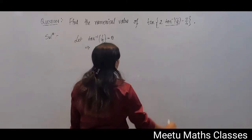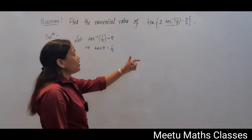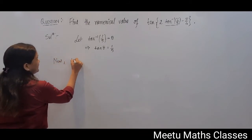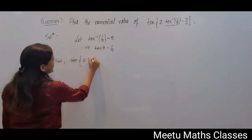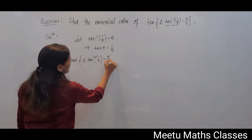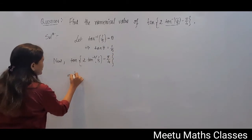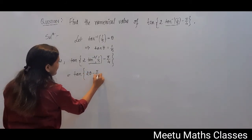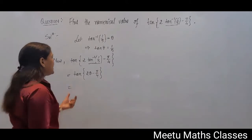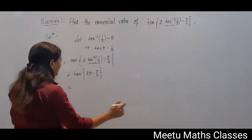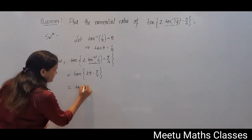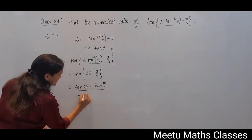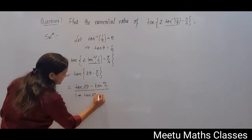tan θ equals 1/5. We are supposed to find the value of tan(2·tan⁻¹(1/5) − π/4), and since tan⁻¹(1/5) = θ, we can write it as tan(2θ − π/4). We can apply the formula for tan(A − B), which is: (tan A − tan B) / (1 + tan A·tan B).